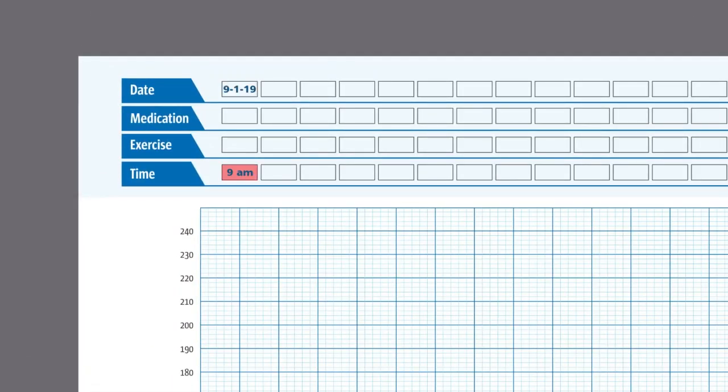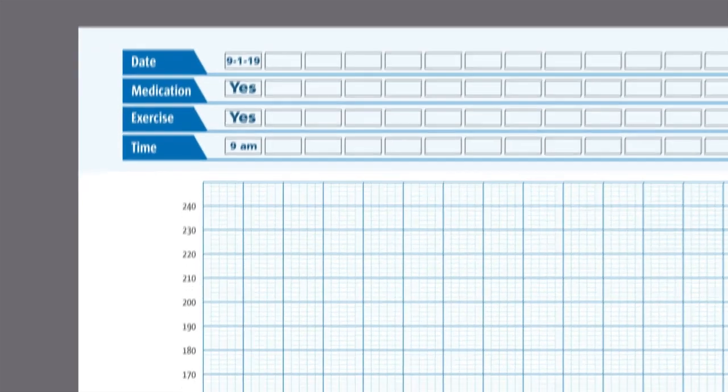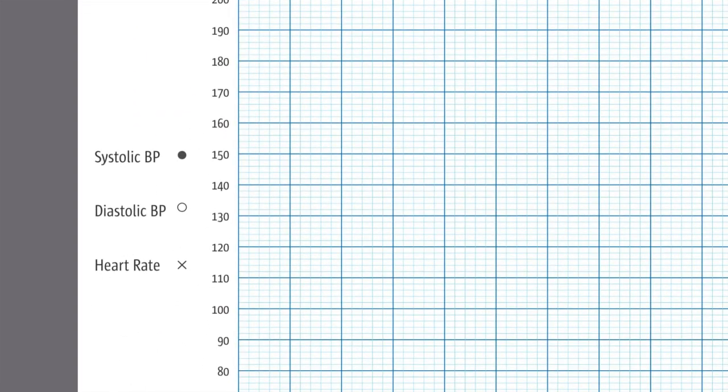Mark YES if you have taken your medication or performed any exercise before measuring blood pressure. Plot your systolic value as a dot, diastolic value as zero, and heart rate as X in the log sheet.